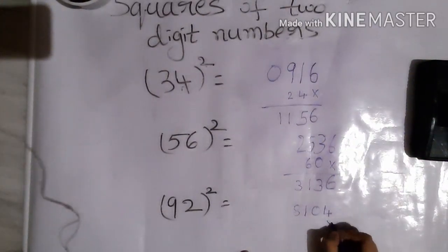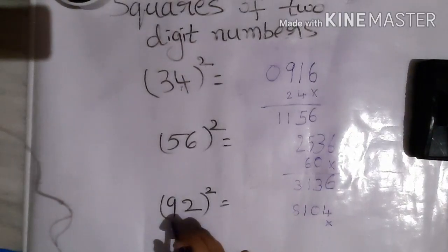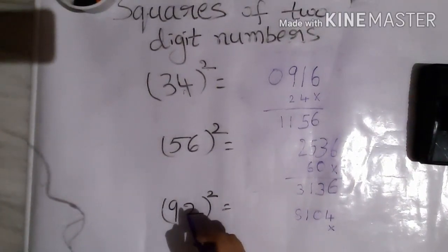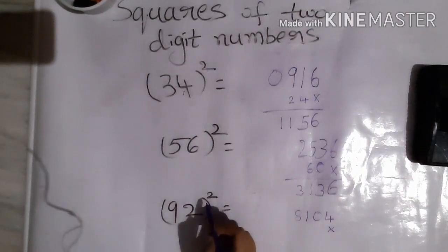Leave the ones place. 9 times 2 is 18, 18 times 2 is 36.